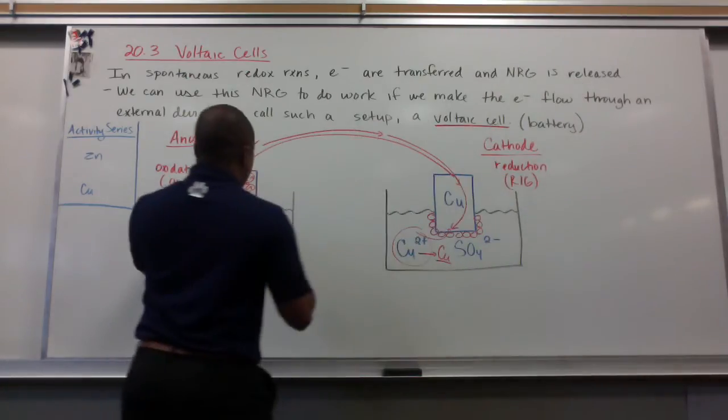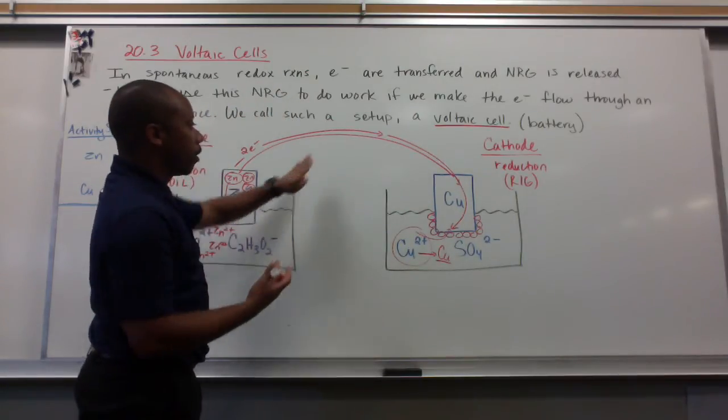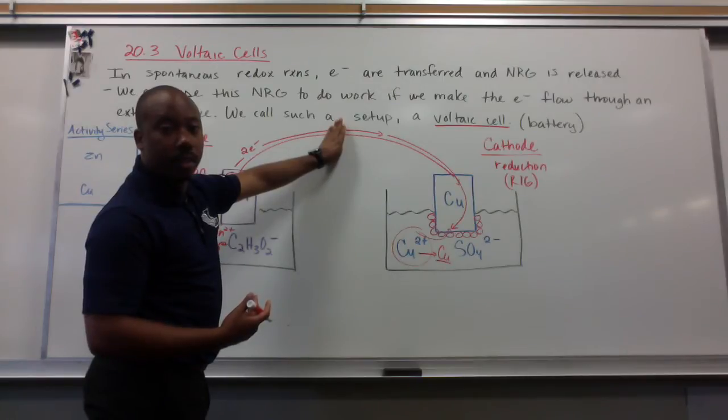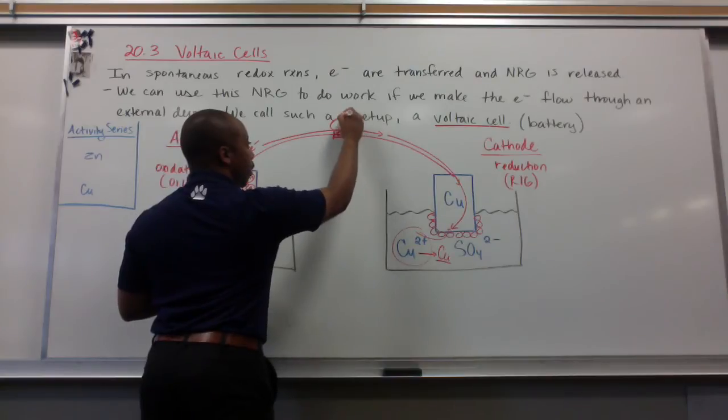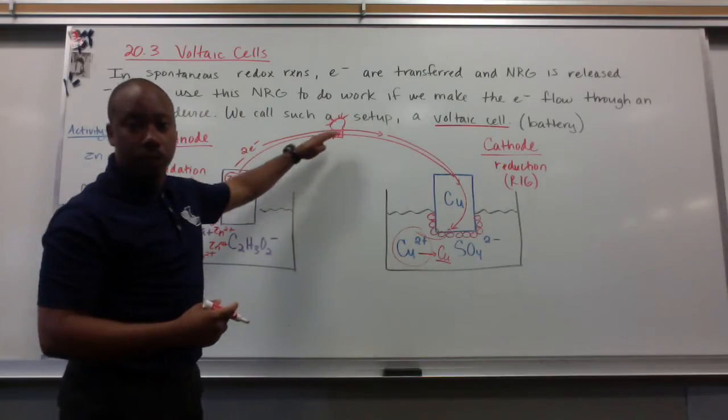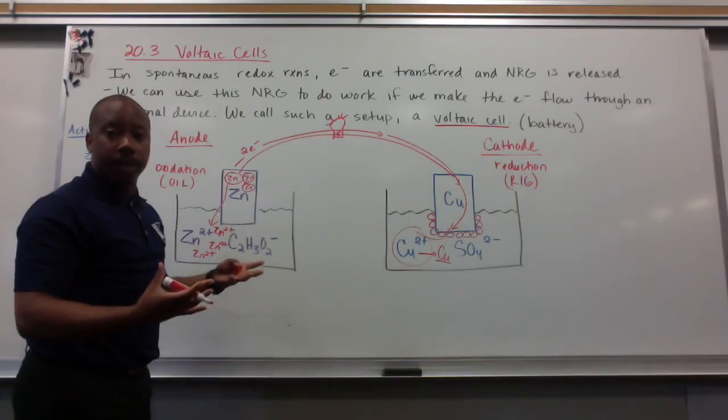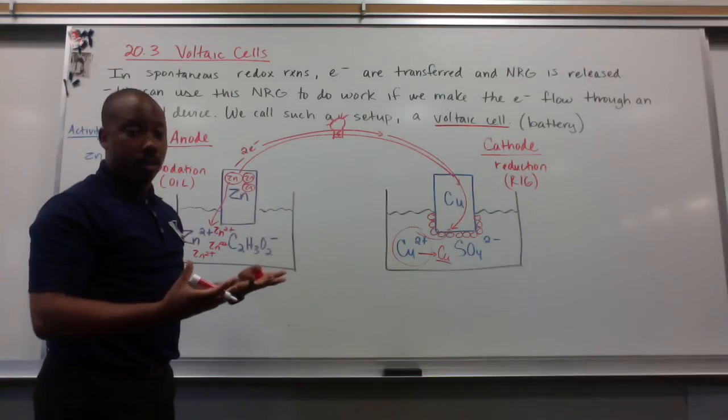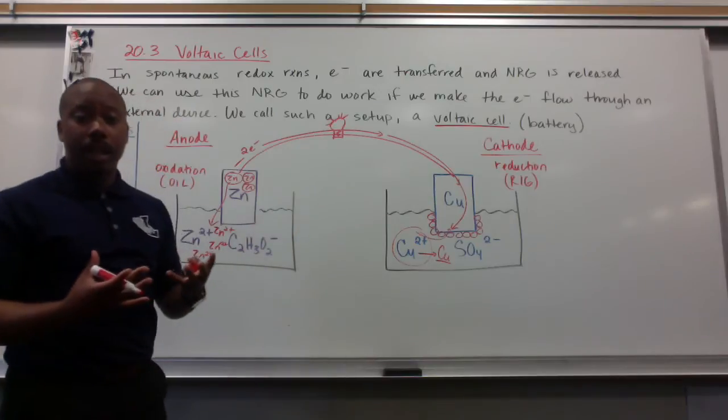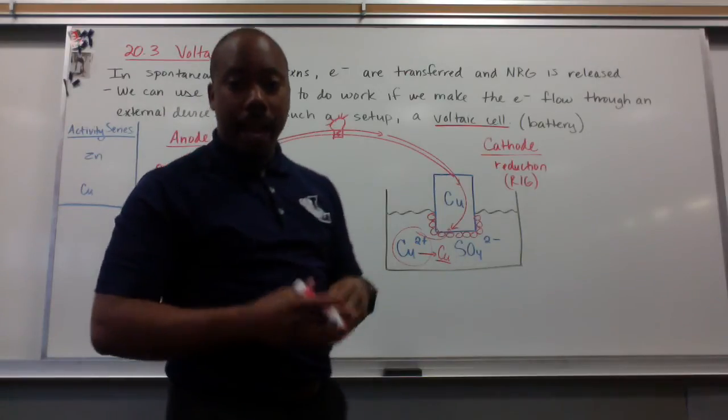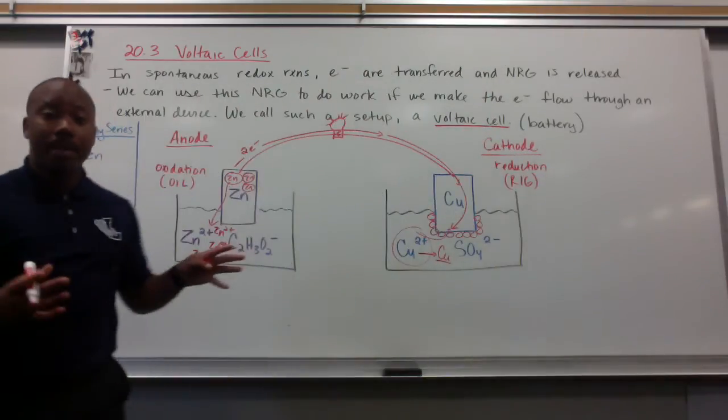So this movement of electrons through a wire is beneficial if we put something like a light bulb here in between. If I put a light bulb here, that light bulb can receive that electricity going through. However, if you know anything about circuitry, this circuit isn't really complete yet. These two half cells are not joined. And that's important because we have to restore or keep a charge balance here.